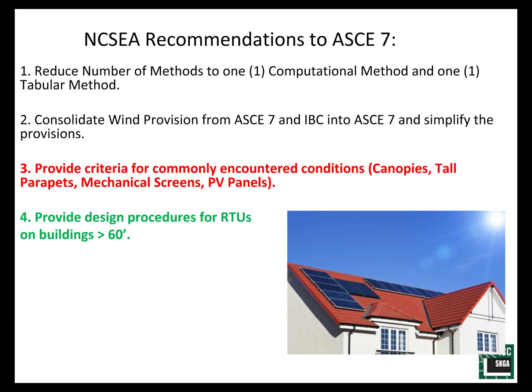The next recommendation was to provide design procedures for rooftop units on tall buildings. Anyone who's dug into ASCE 7 realizes there's a disconnect at 60 feet. We'll talk about this a handful of times today — 60 feet does not represent any magical change in wind phenomenon. It's really about how a method was generated and what test data was used. The idea is to give recommendations for how to deal with rooftop equipment on tall buildings. The fifth recommendation was to simplify solid freestanding wall provisions. There weren't meaningful changes in 7-16, and I'm not convinced we'll see meaningful changes in 7-22, but if we dig into them — and we will today — we can simplify them on our own if we understand the intent of the code.